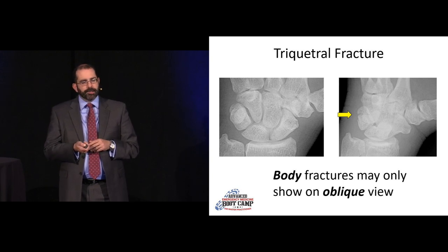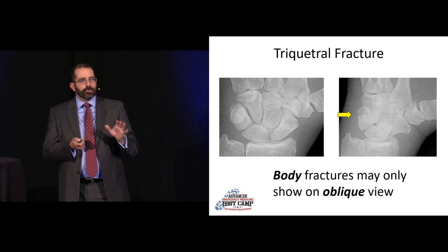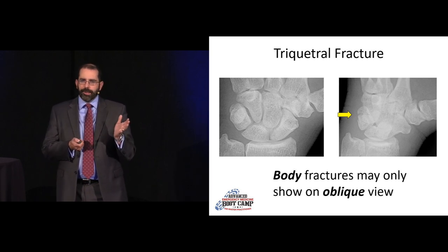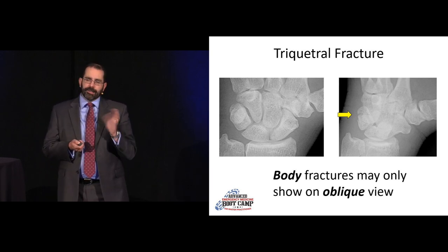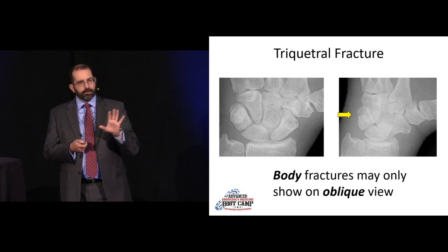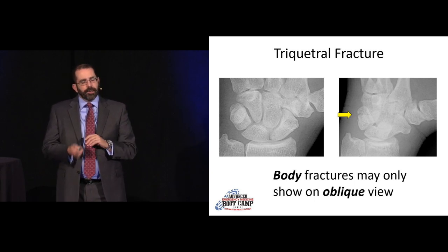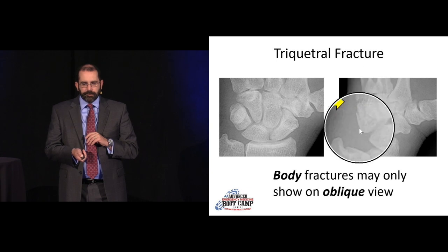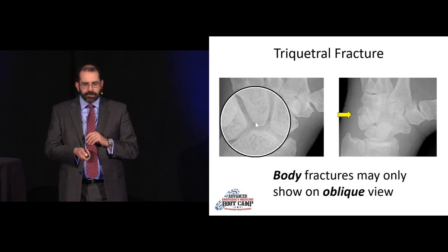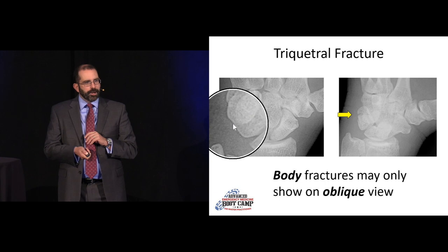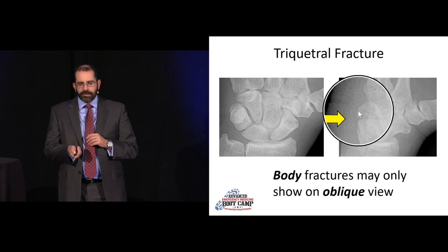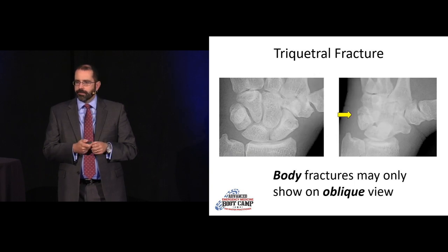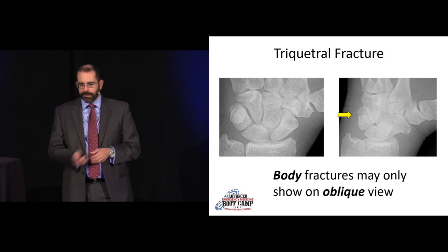If you miss this little chip fracture, it's not the end of the world — we splint mostly for comfort, and as long as there are no other injuries it's more of a nuisance fracture, but it's poor form to miss anything. Look on your lateral for triquetral fractures. Body fractures can be subtle — just like in the foot, we get different views. We get an AP, oblique, and lateral. We get an oblique specifically for a better look at the triquetral body, which the pisiform can hide on the AP view.